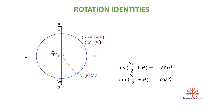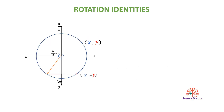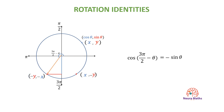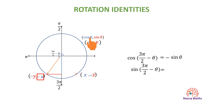We are left with one possible angle: the angle 3 pi over 2 minus theta, which results from rotating this point 90 degrees clockwise. What do you think the coordinates of this point would be? The coordinates of this point would be negative y and negative x. The x-coordinate of the point corresponding to angle 3 pi over 2 minus theta is equal to negative the y-coordinate of the original point. So, cosine of 3 pi over 2 minus theta is equal to negative sine theta. Also, the y-coordinate of that point is equal to negative the x-coordinate of the original point, so sine of 3 pi over 2 minus theta is equal to negative cosine theta.